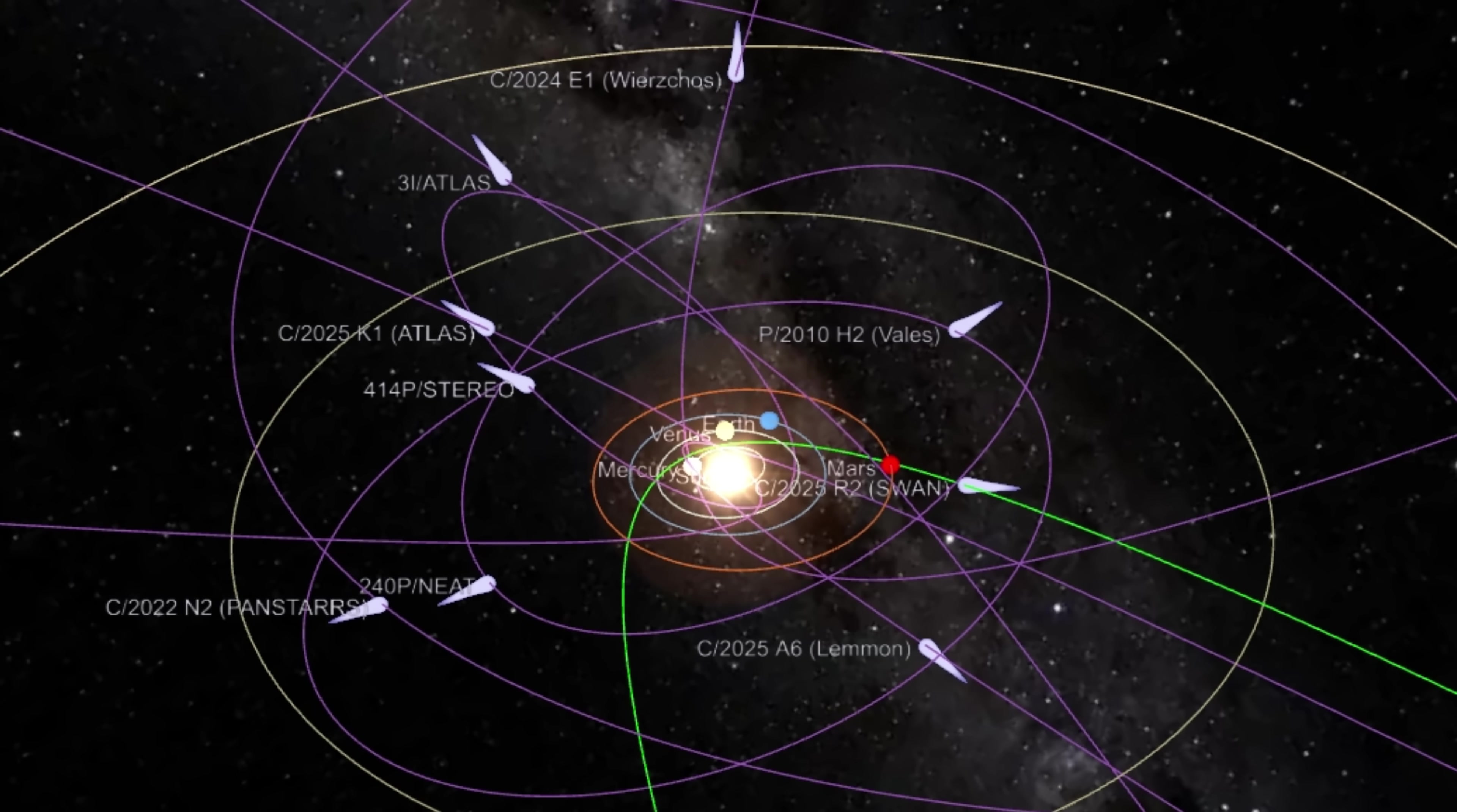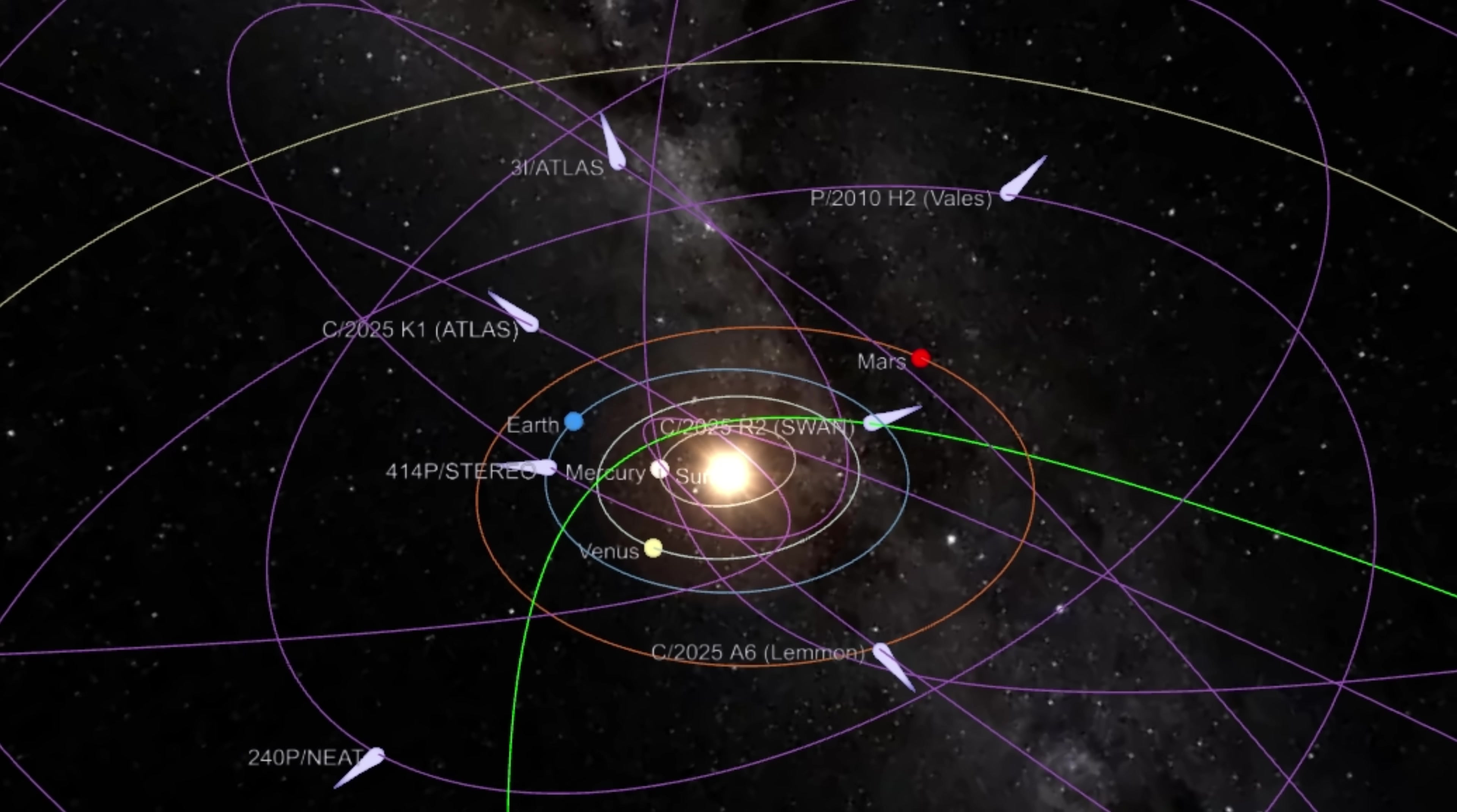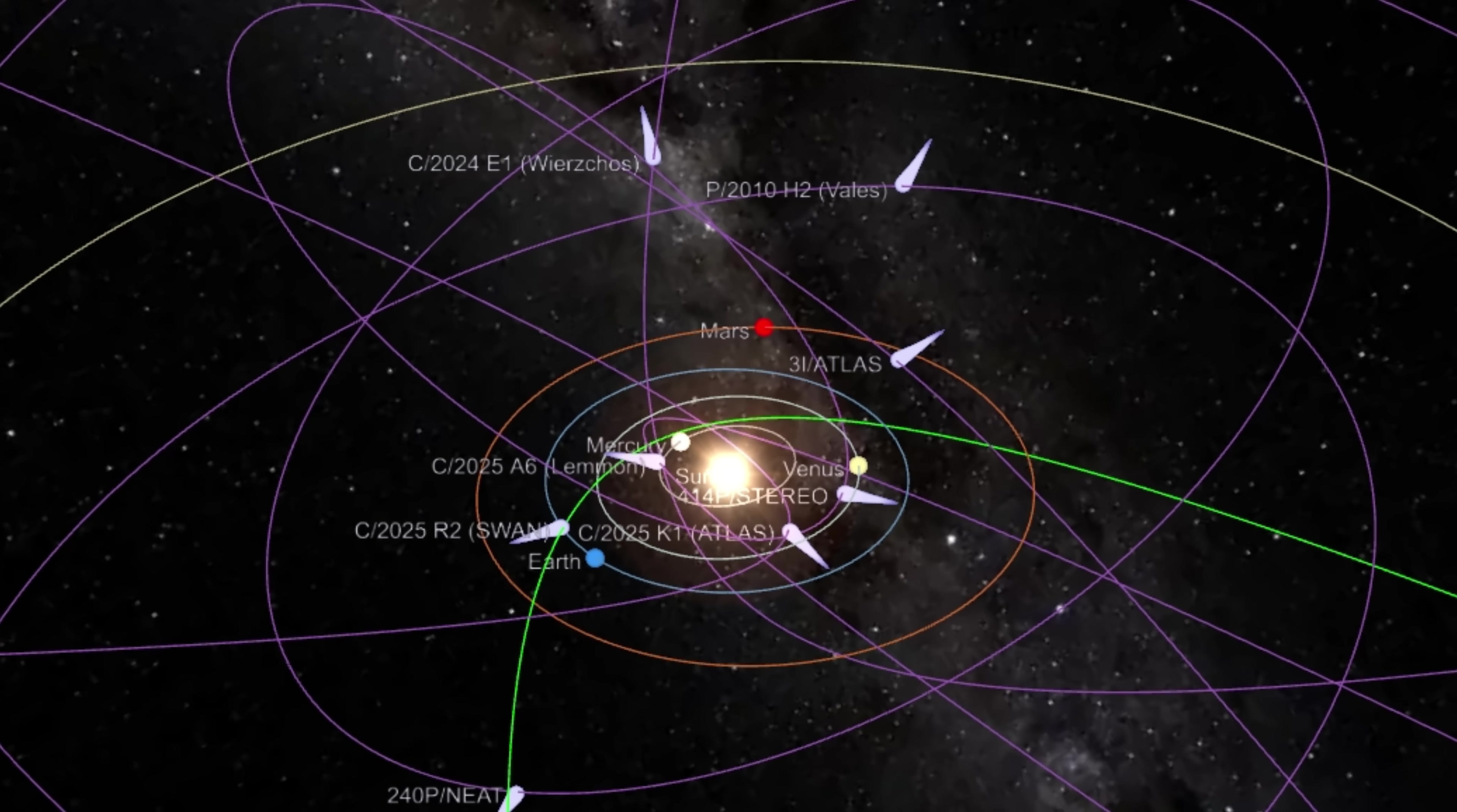This readiness is crucial because the next interstellar object could be discovered at any moment. Statistical models suggest that at any given time, there are likely thousands of interstellar objects passing within the orbit of Neptune. As our survey telescopes improve, we will find more of them. The protocols refined during the 3I/ATLAS observation—the frequency choices, the nodding strategies, the de-Doppler algorithms—will serve as the template for future searches. We are effectively rehearsing for the day when the phone finally rings.